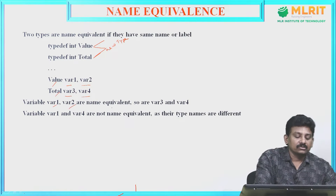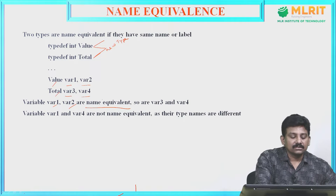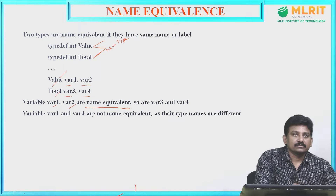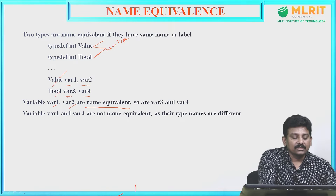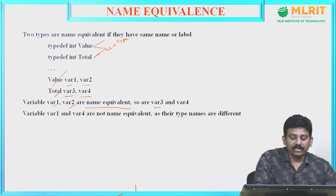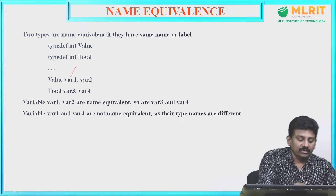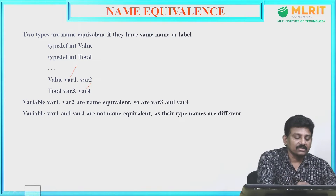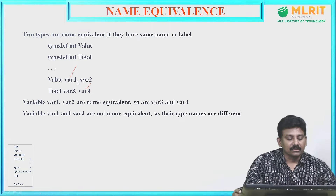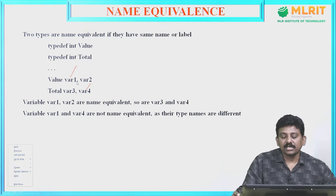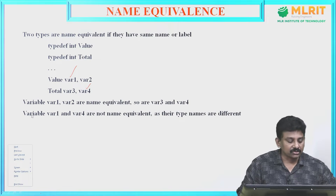var1 and var2 are name equivalent because they both have the same type name, value. Similarly, var3 and var4 are equivalent because they both have the type name total. But var1 and var4 are not equivalent because var1 is of type value and var4 is of type total — their type names are different. That is about name equivalence.